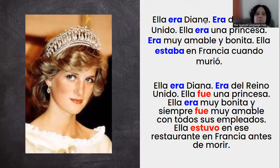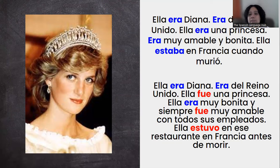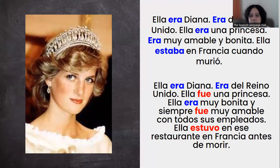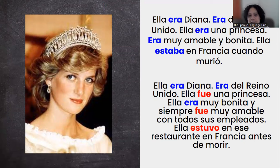Now the first example — let's talk about Lady Di. Ella era Diana. Era del Reino Unido. Ella era una princesa. Era muy amable y bonita. Ella estaba en Francia cuando murió. So here I'm using imperfecto because I'm describing her — describing how she was in the past, how she was before she died.